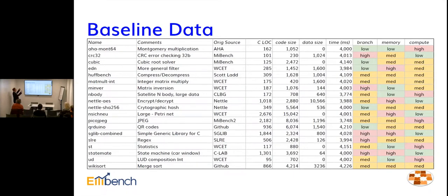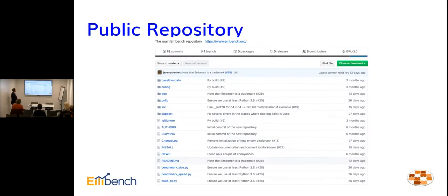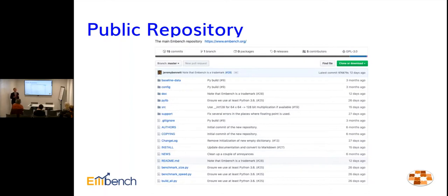So we've got a whole set of baseline data — what do we do with that? There's a public repository. If you go to mbench.org the main website will point you to the repositories. There are three repositories: MBench IoT with these benchmarks, the MBench context-switching benchmark in its own repository, and an MBench results repository. Use that one with caution — it's still a proof of concept. But ultimately the idea is you'll be able to do a pull request with your results.